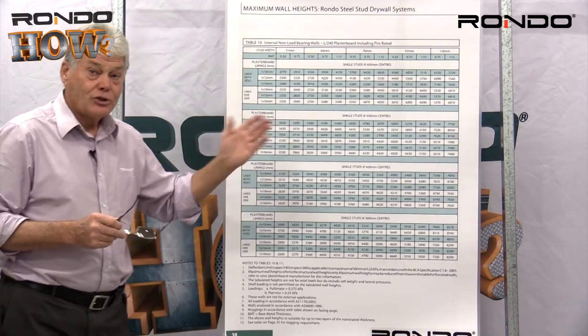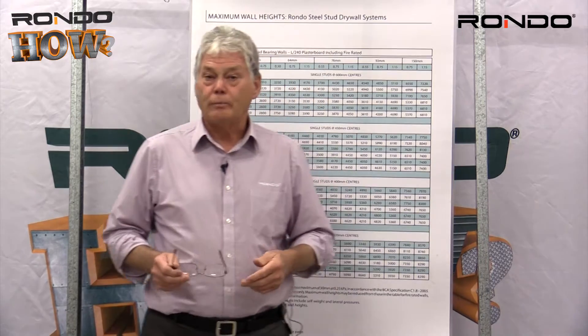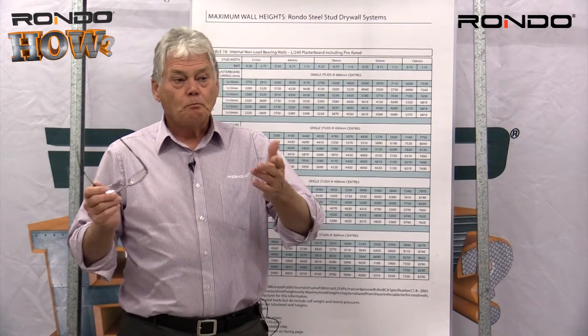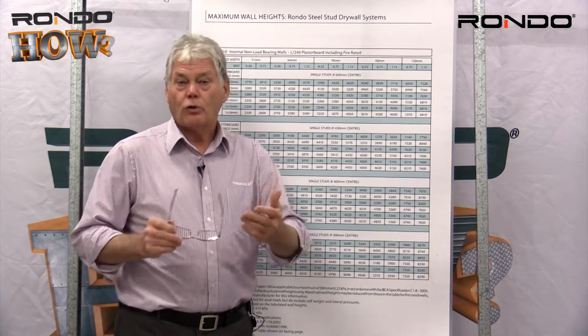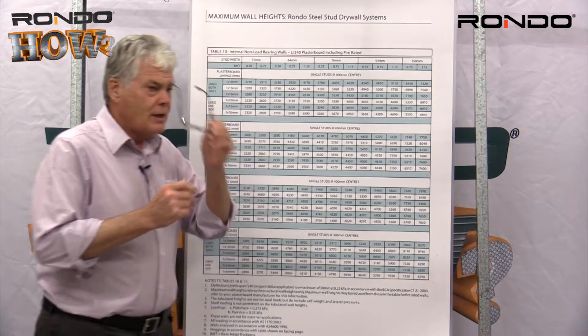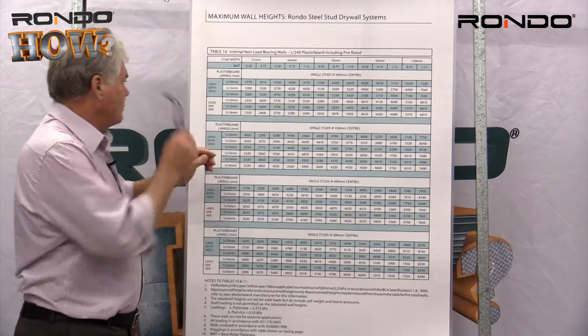How does the chart work? If you are constructing a wall with a height of say 4.1 meters, line both sides with 13mm plasterboard. Let's go to the chart and have a look at what we can select.